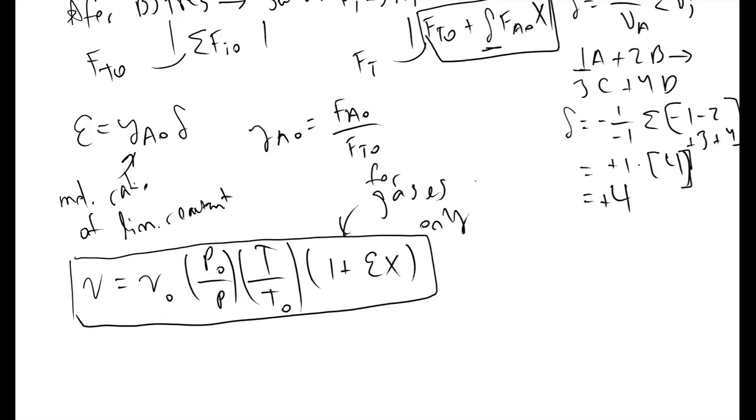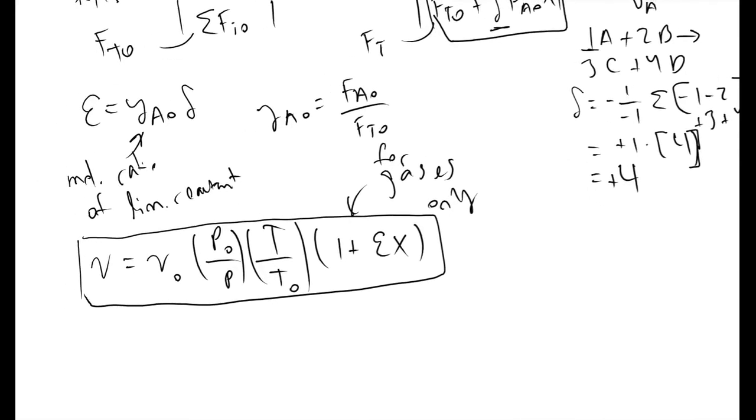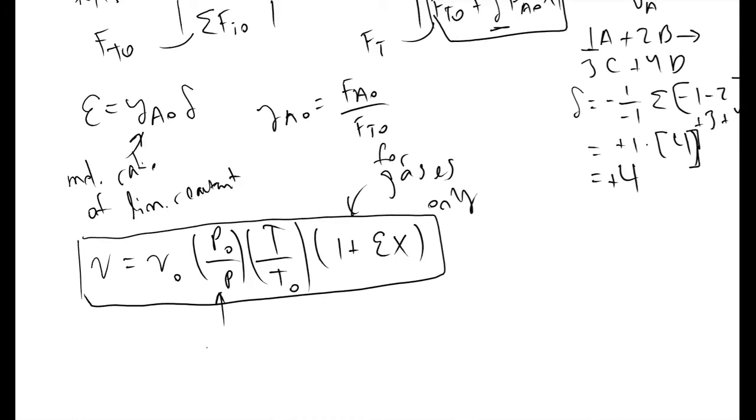If we have an isobaric reactor, this quantity will equal 1. If we have an isothermal reactor, this quantity will equal 1, because T will equal T0.